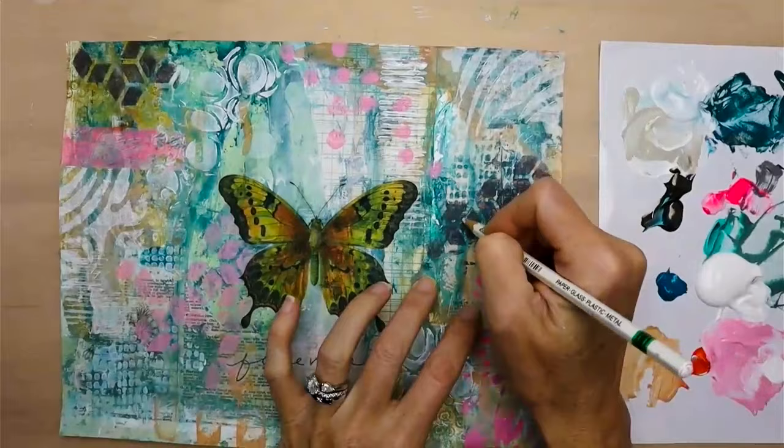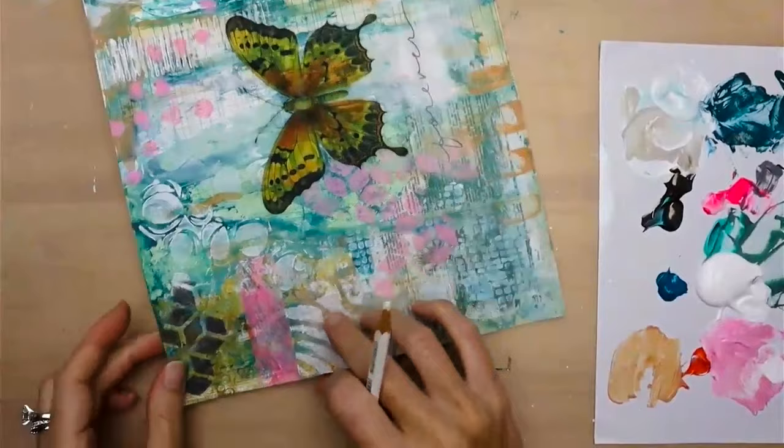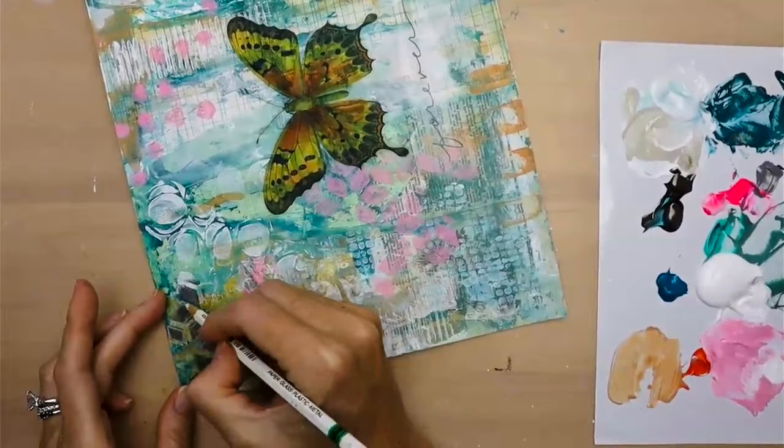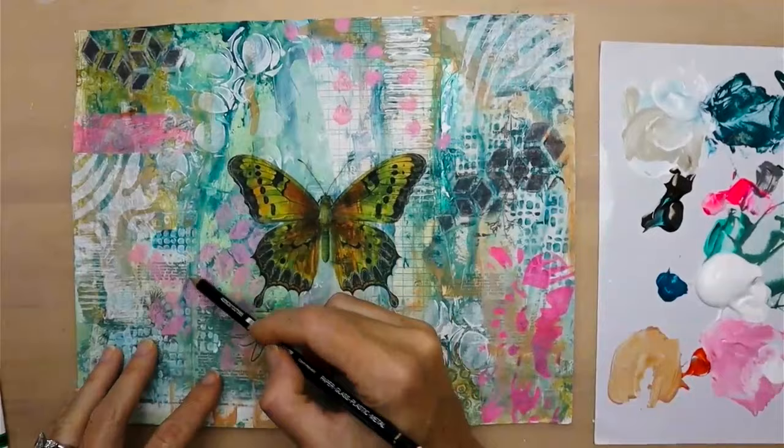And then this is a kind of a wax pencil, pretty much draws on anything. So I just wanted to outline some of the black to give it a little bit more of a dimension to it and soften it up a little bit. Just kind of going in and doing some details. Same with the black pencil. It's the same kind of pencil.